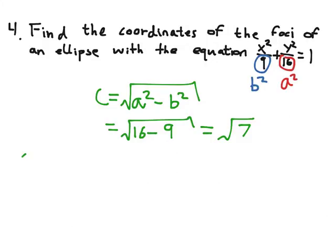Now, our center, as we can tell from the equation, is just the origin, 0, 0. So I have to add or subtract this C, get my plus or minus C for the foci.